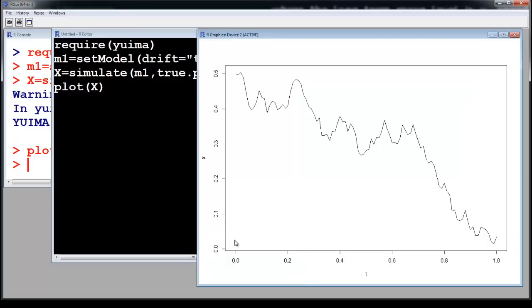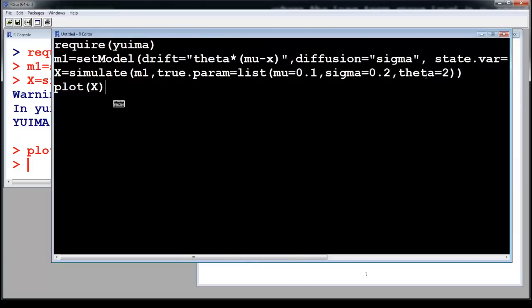So mean was 0.1. So it somehow comes close to 0.1. So you can just keep on changing theta and this will give you different values. And you can keep changing sigma.